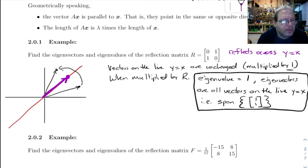Are there any other vectors that this reflection will either leave unchanged or reverse the direction of? The answer is yes.